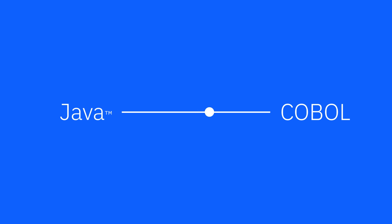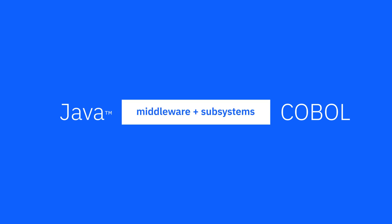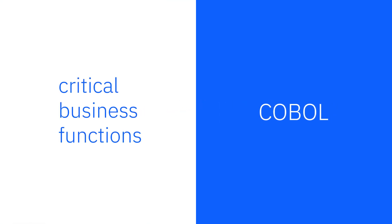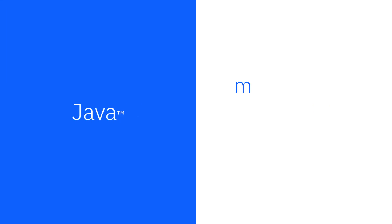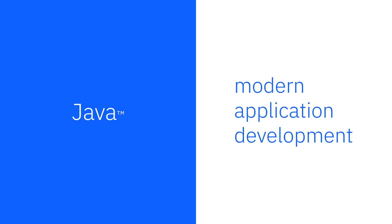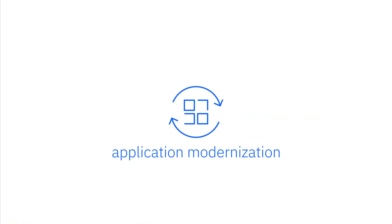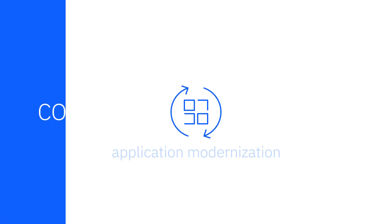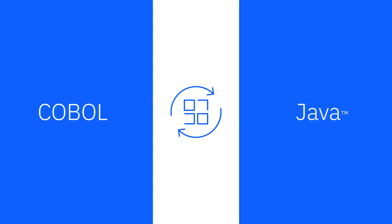This video highlights various approaches in which you can take Java and COBOL and interoperate between the two languages via middleware and subsystems. COBOL supports critical business functions, and Java is a popular choice for modern application development. To enable application modernization, business services often need logic that is written in both COBOL and Java.